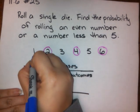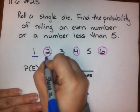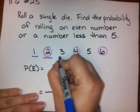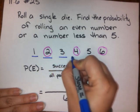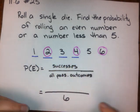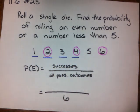Now I'm going to underline all of the numbers that are less than 5: 1, 2, 3, and 4. That's 4 successes.